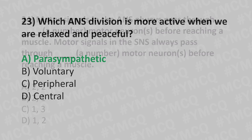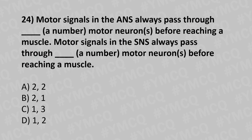Moving to our twenty-fourth question. Motor signals in the ANS always pass through dash motor neurons before reaching a muscle; motor signals in the SNS always pass through dash motor neurons before reaching a muscle. Option A: 2, 2. Option B: 2, 1. Option C: 1, 3. Option D: 1, 2. And the answer is option B: 2, 1.